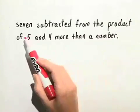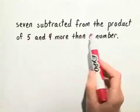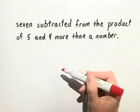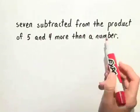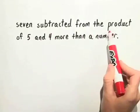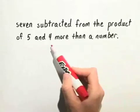We know that 7 is being subtracted from something. So what is it being subtracted from? It's being subtracted from the product of 5 and something else.